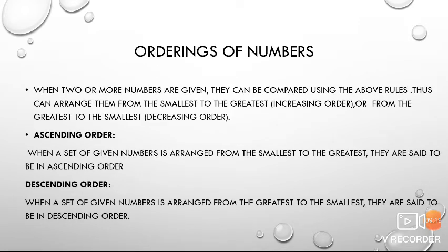Now, moving towards our next topic: ordering of numbers. When two or more numbers are given, they can be compared using the above rules and arranged from the smallest to the greatest — that is increasing or ascending order — or from the greatest to the smallest — that is decreasing or descending order. Ascending order: when a set of numbers is arranged from the smallest to the greatest, they are said to be in ascending order. Descending order is just the opposite — when numbers are arranged from the greatest to the smallest, they are said to be in descending order.